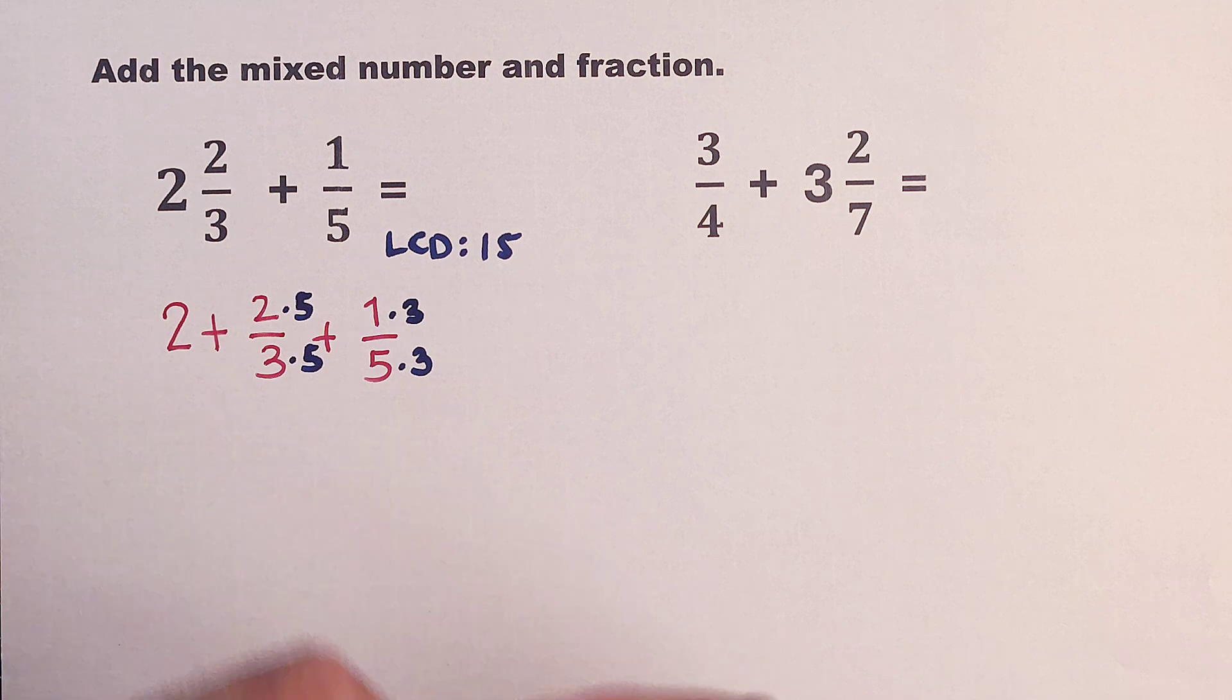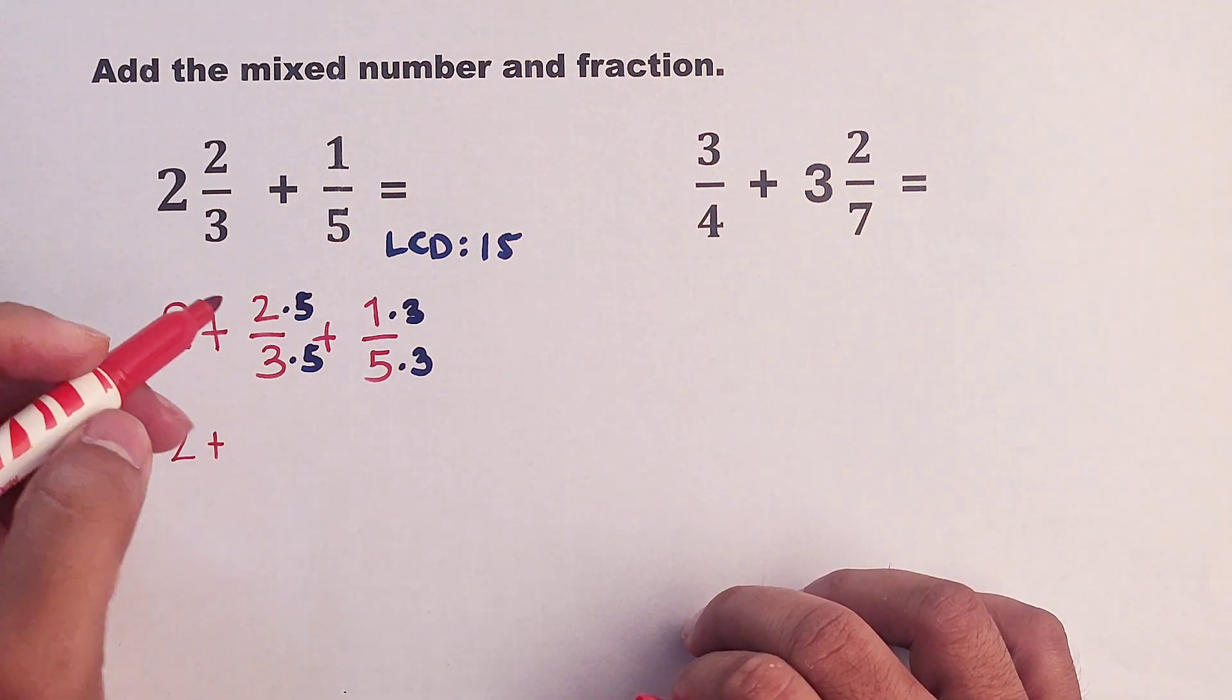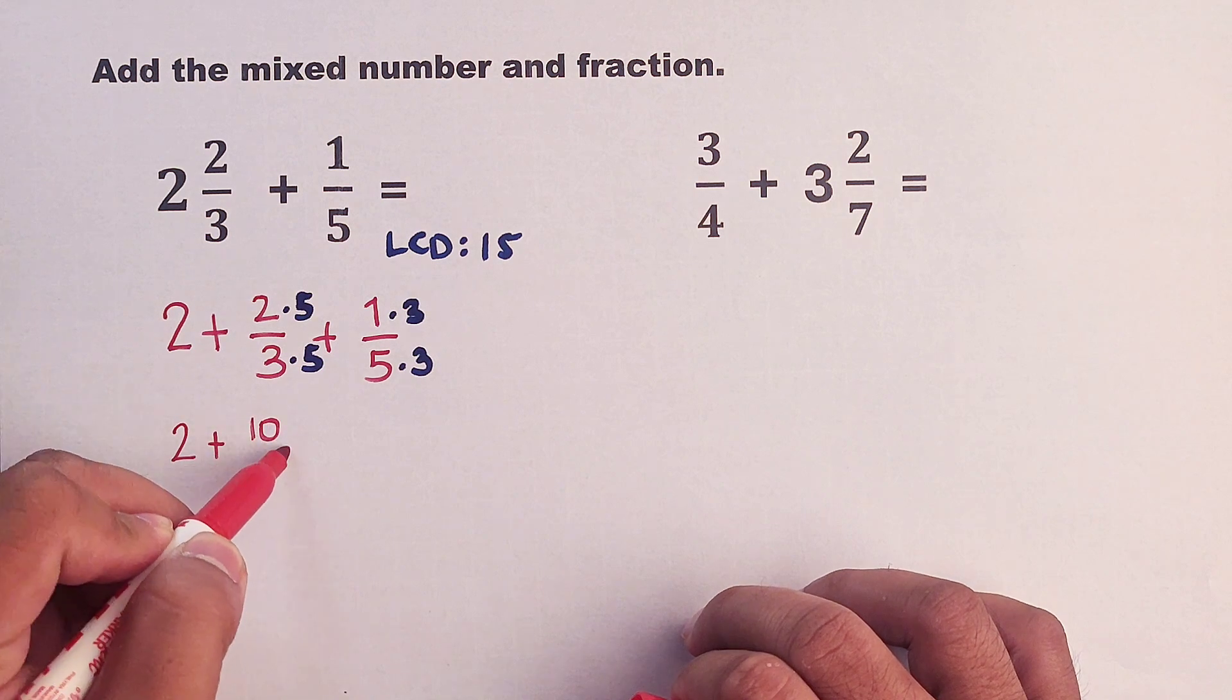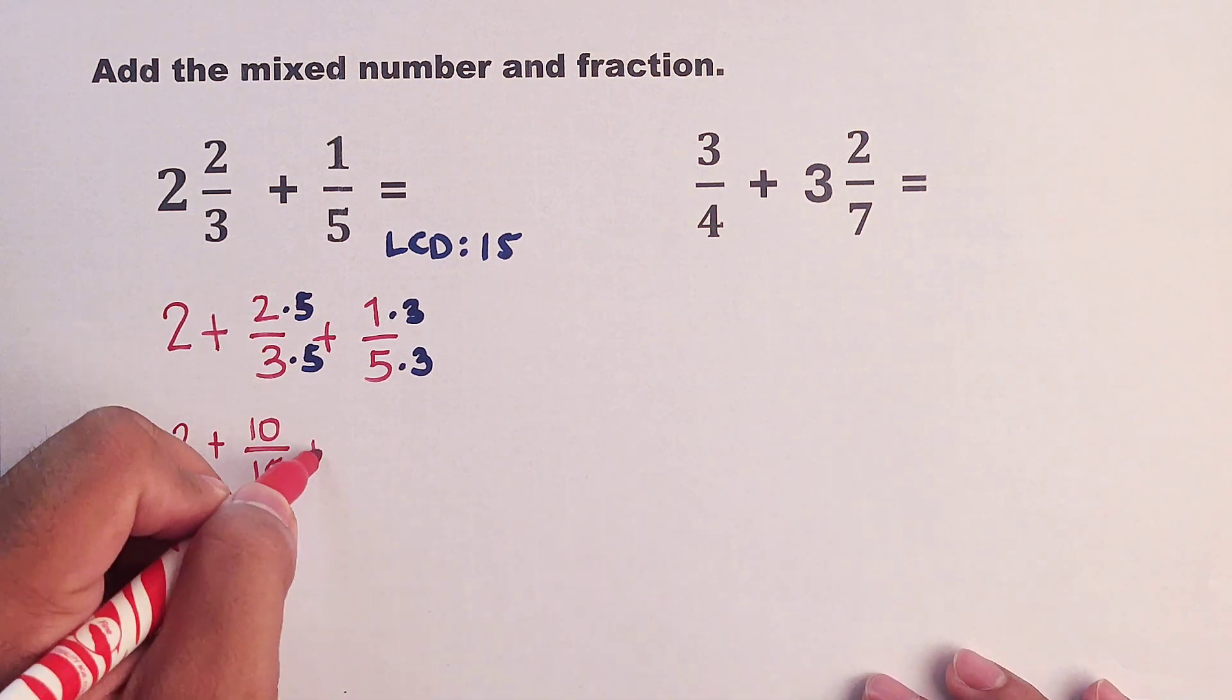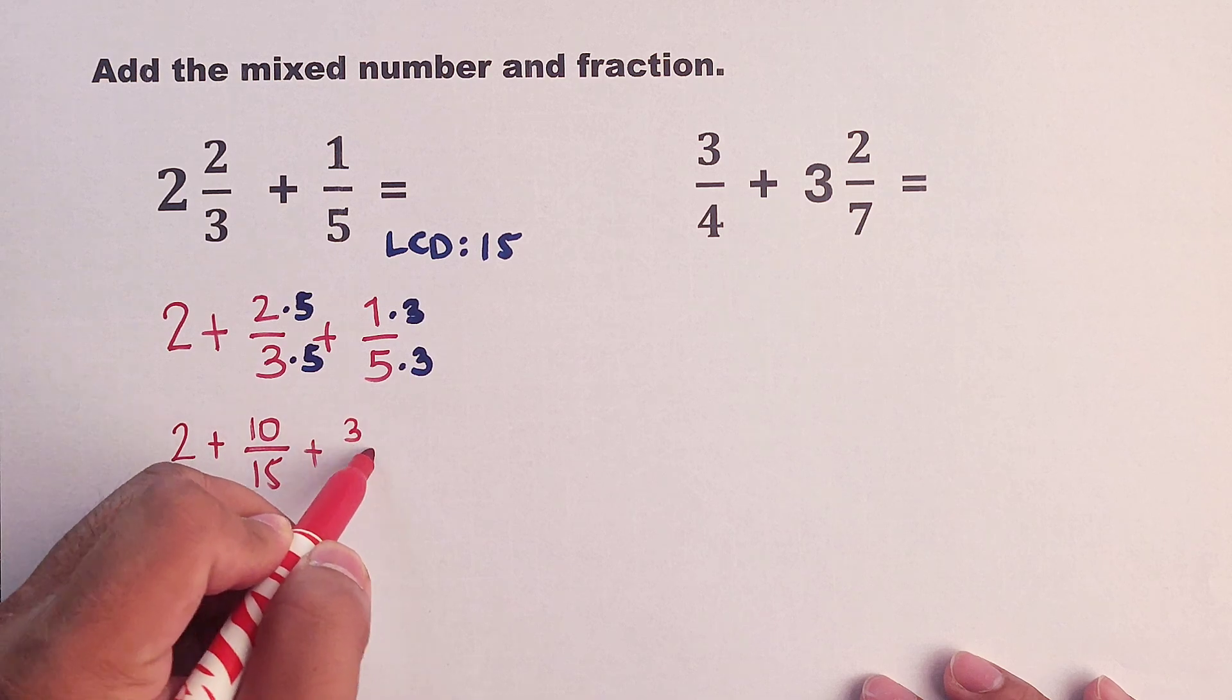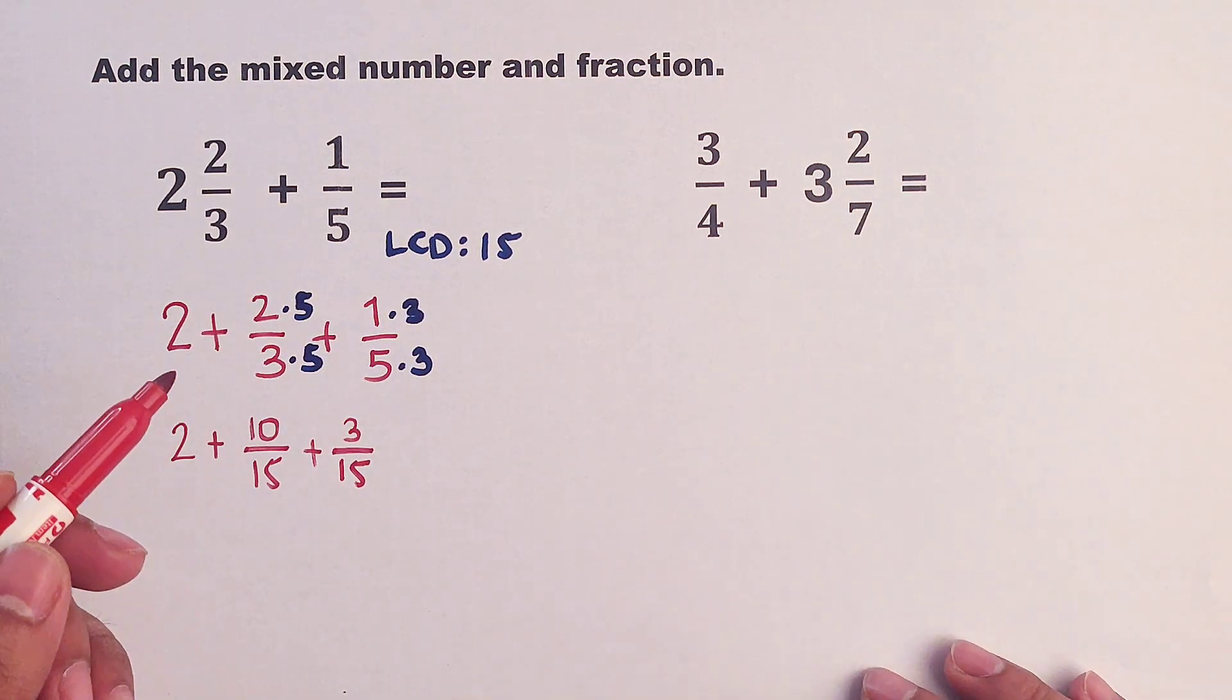And we can do now the multiplication. We have 2 plus this is 10 over 15 plus this is 3 over 15. And as you can see, we have the same denominators right now.